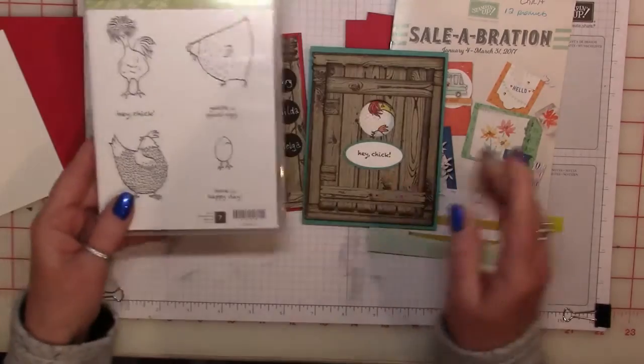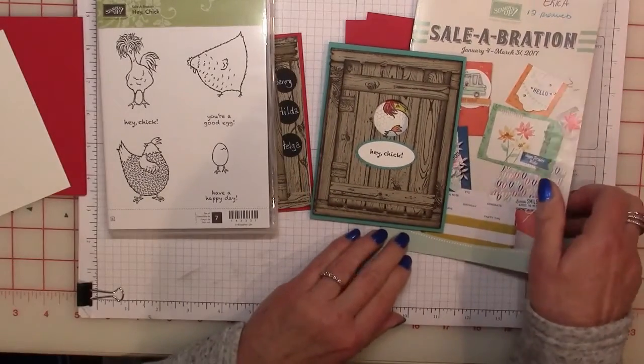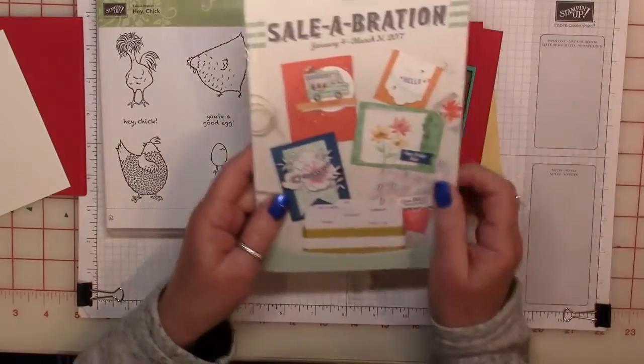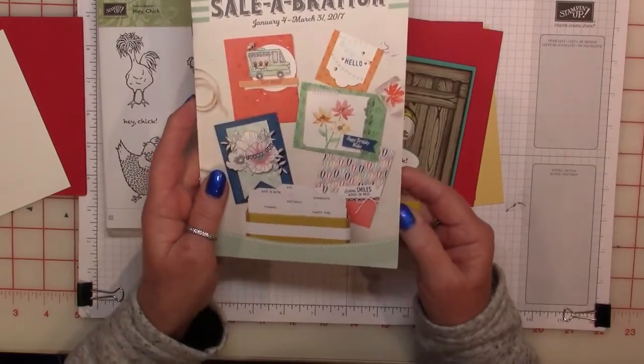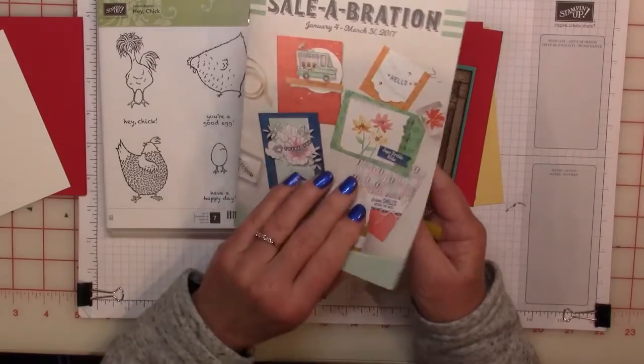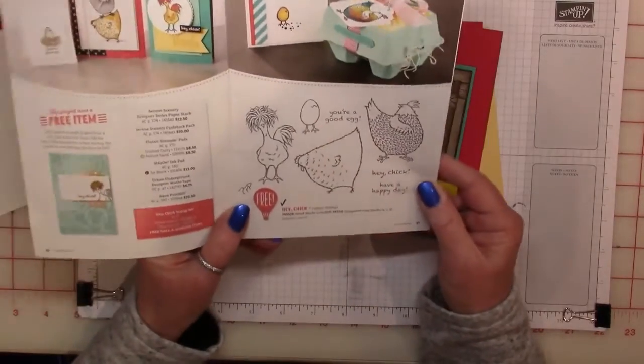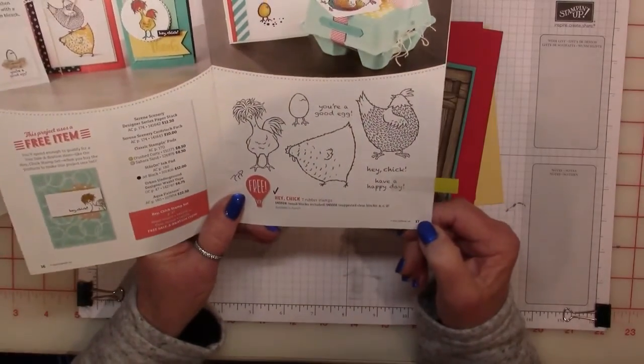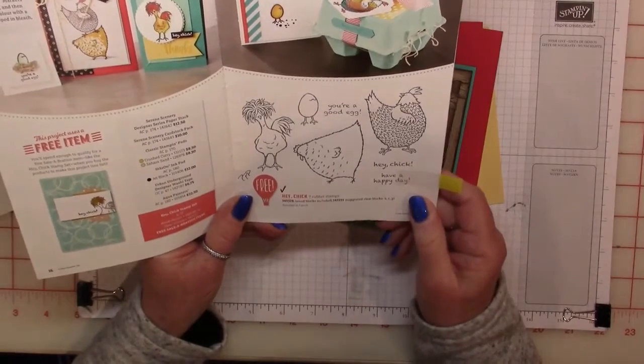So basically, if you live in Canada, for every sixty dollars in purchases that you make through Stampin' Up, you can pick a free item from this little catalog. The Hey Chick stamp set happens to be on page seventeen. When I saw this, I just had to get it.